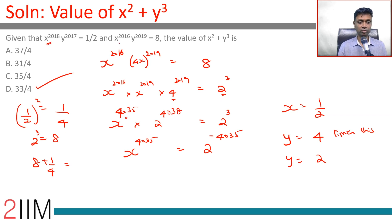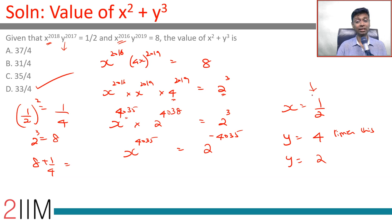For the negative case: x^2018 is positive and x^2016 is positive, so y must be positive. However, x could technically be +1/2 or −1/2. Since we're computing x², the sign of x doesn't matter — the answer remains 33/4.